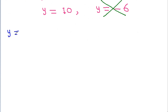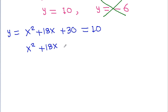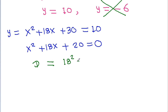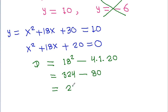Setting x² + 18x + 30 = 10 gives x² + 18x + 20 = 0. Checking the discriminant: D = 18² - 4(1)(20) = 324 - 80 = 244, which is positive. That means both roots are real.